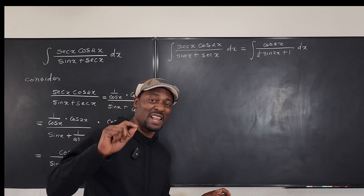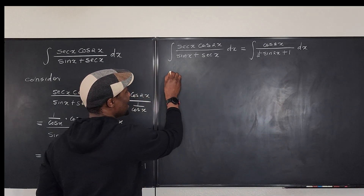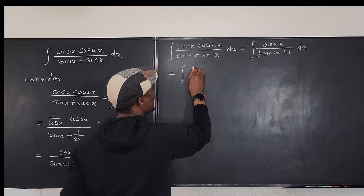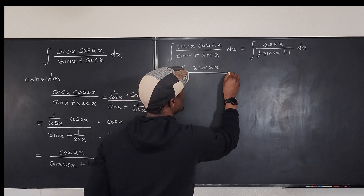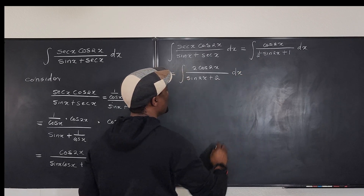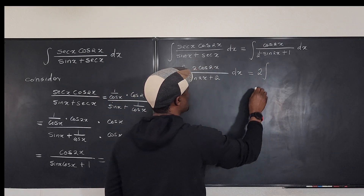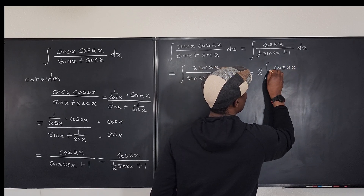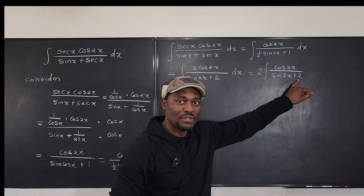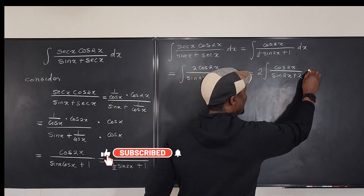Let's clean this up. Multiplying everything by 2 to clear the half, we get the integral of 2 cos 2x over (sin 2x + 2) dx. Pulling the 2 out front gives 2 times the integral of cos 2x over (sin 2x + 2) dx. Now you can see that the derivative of the denominator is exactly the numerator — u-substitution saves us.